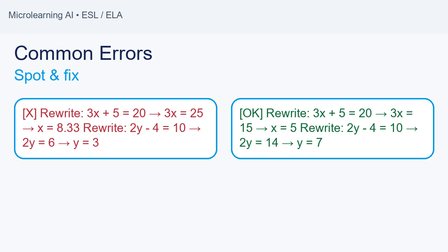Correct versions are: Rewrite 3x plus 5 equals 20. 3x equals 15. x equals 5. Rewrite 2y minus 4 equals 10. 2y equals 14. y equals 7.